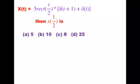First of all, do not directly substitute t equal to 1 by 2 into the given problem, as that gives the wrong answer. We first need to simplify using the convolution property, and then substitute t equal to 1 by 2 to get the correct answer. Let's go through it step by step.